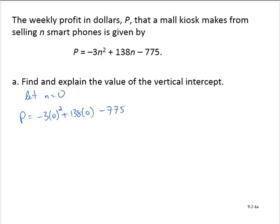Notice how the first and second terms go to 0, and we're left with negative 775. So writing that as an ordered pair, we would have 0, negative 775.